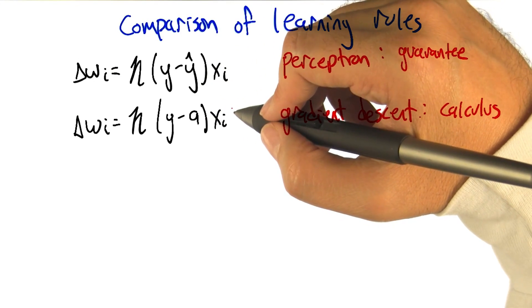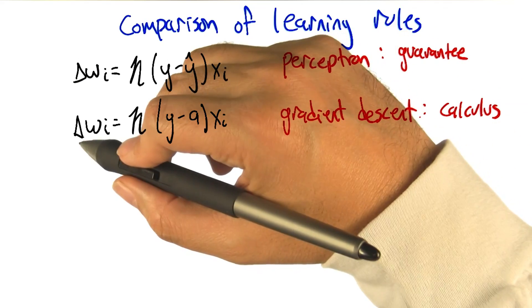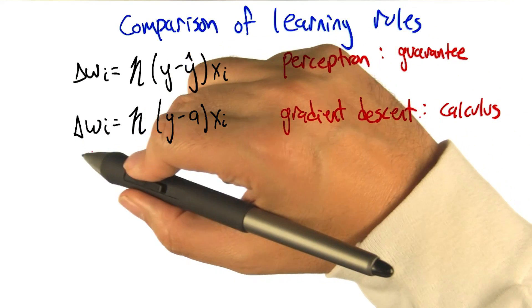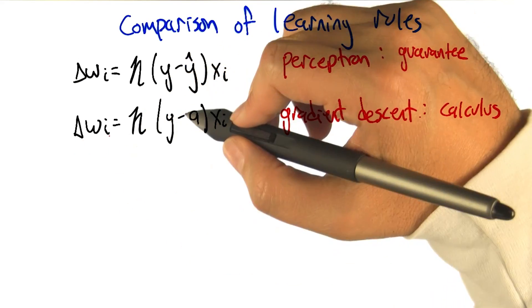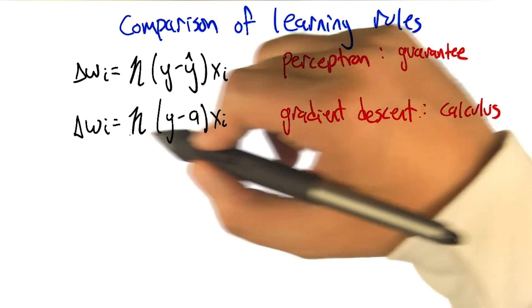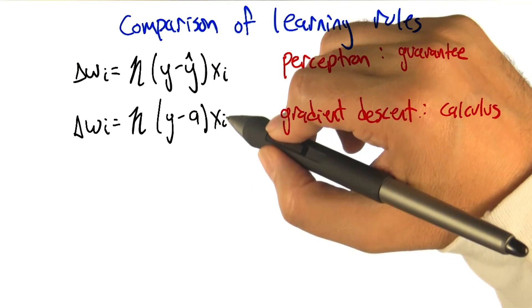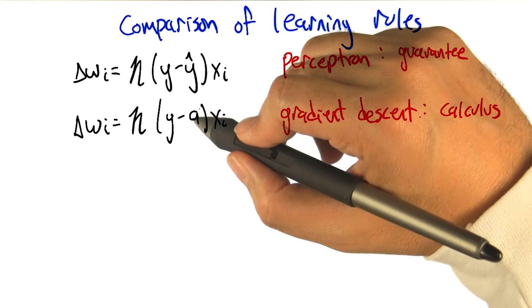So here's our two update rules, what they end up being. The gradient descent rule that we just derived says that what we want to do is move the weights in the negative direction of the gradient. So if we negate that expression that we had before and take a little step in that direction, we get exactly this expression. Multiply the input on that weight times the target minus the activation.